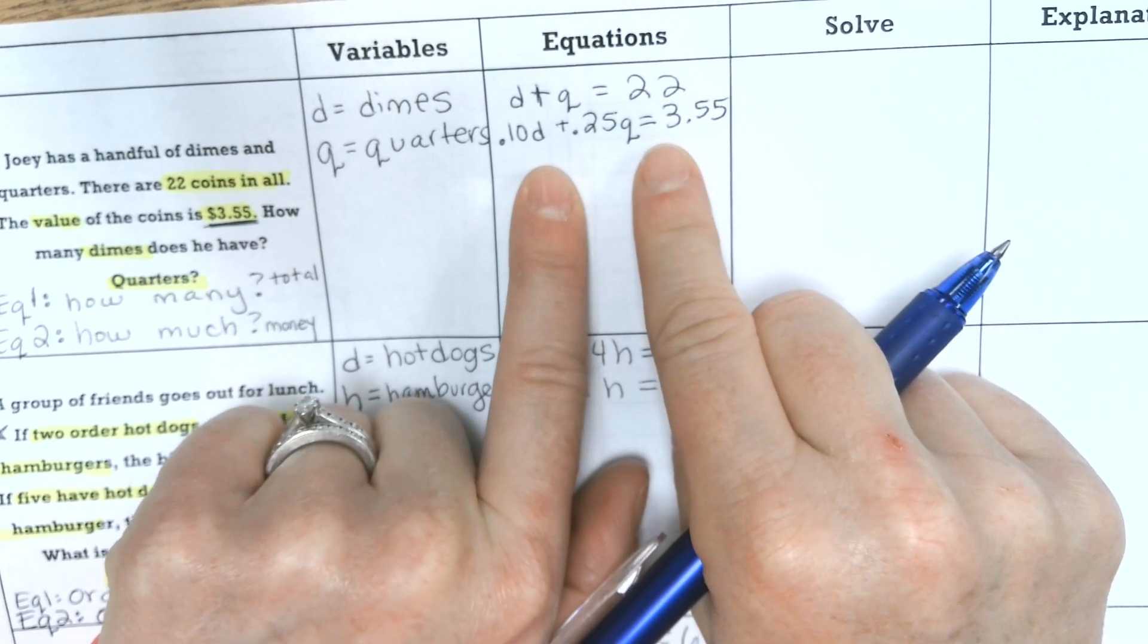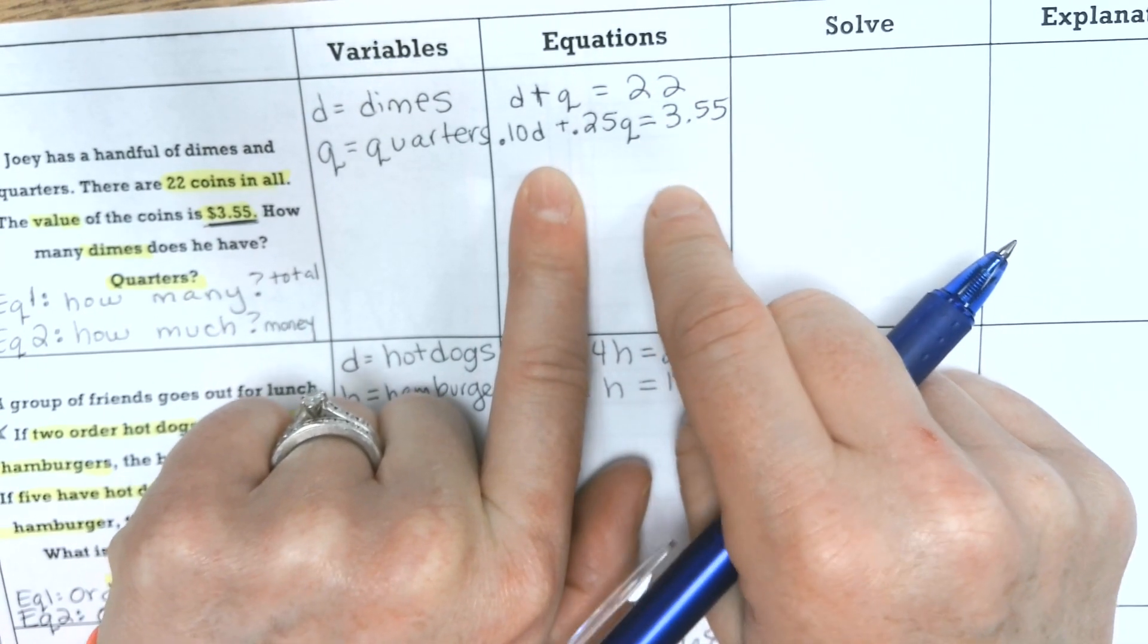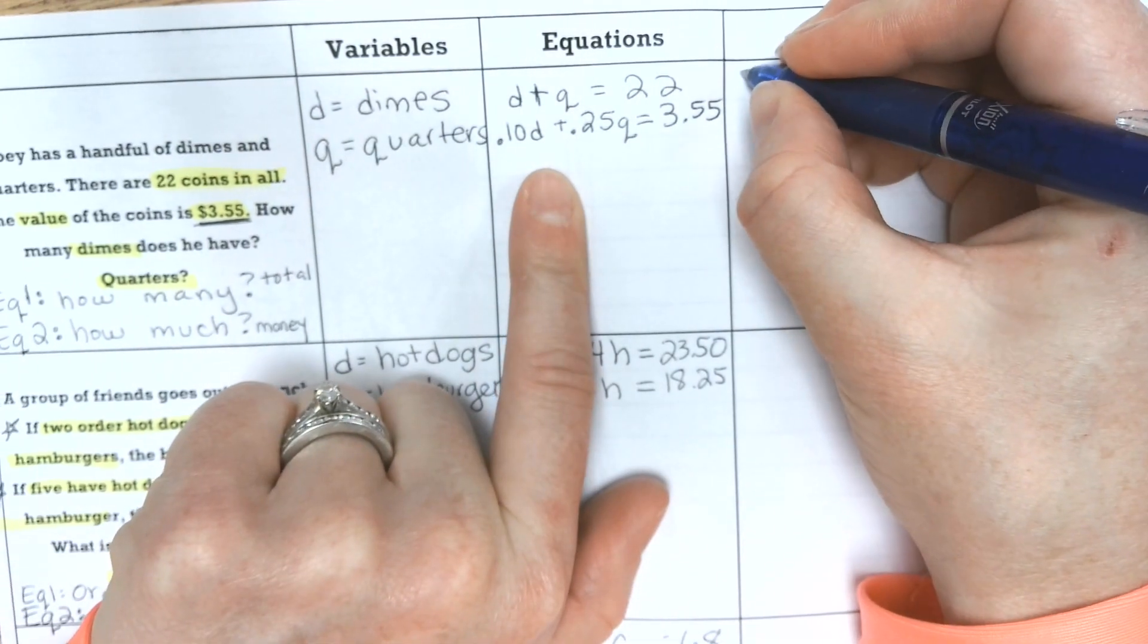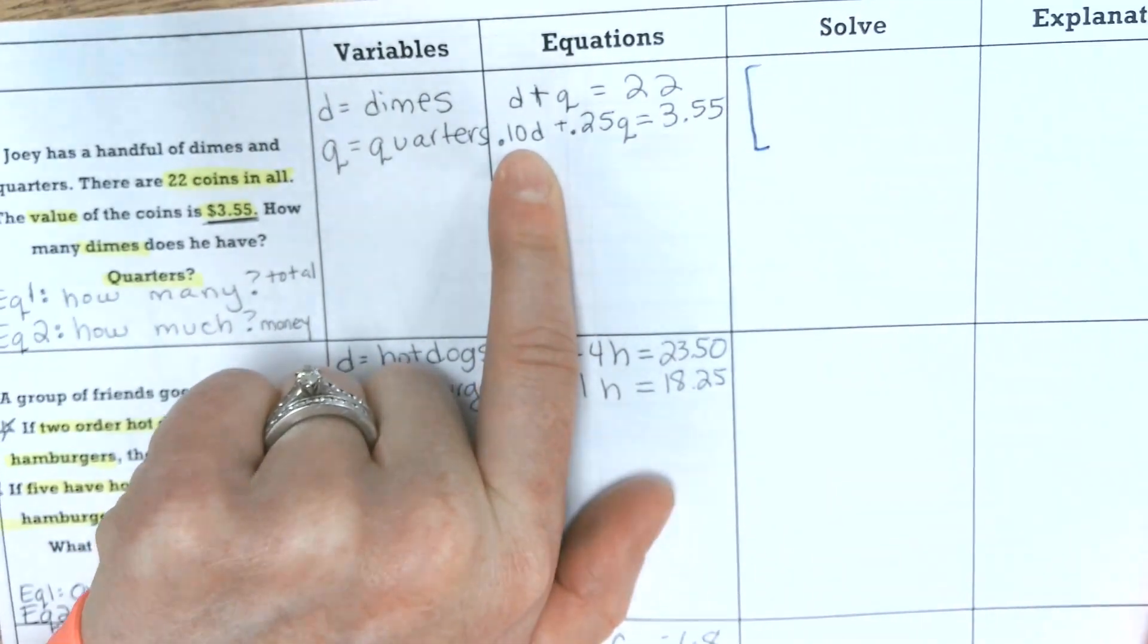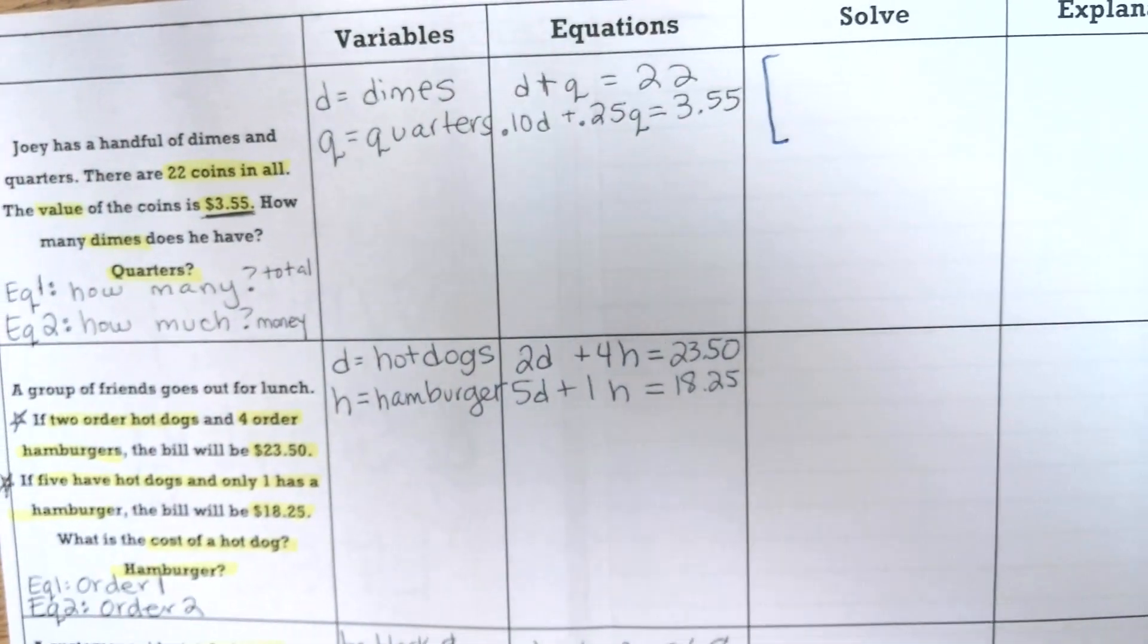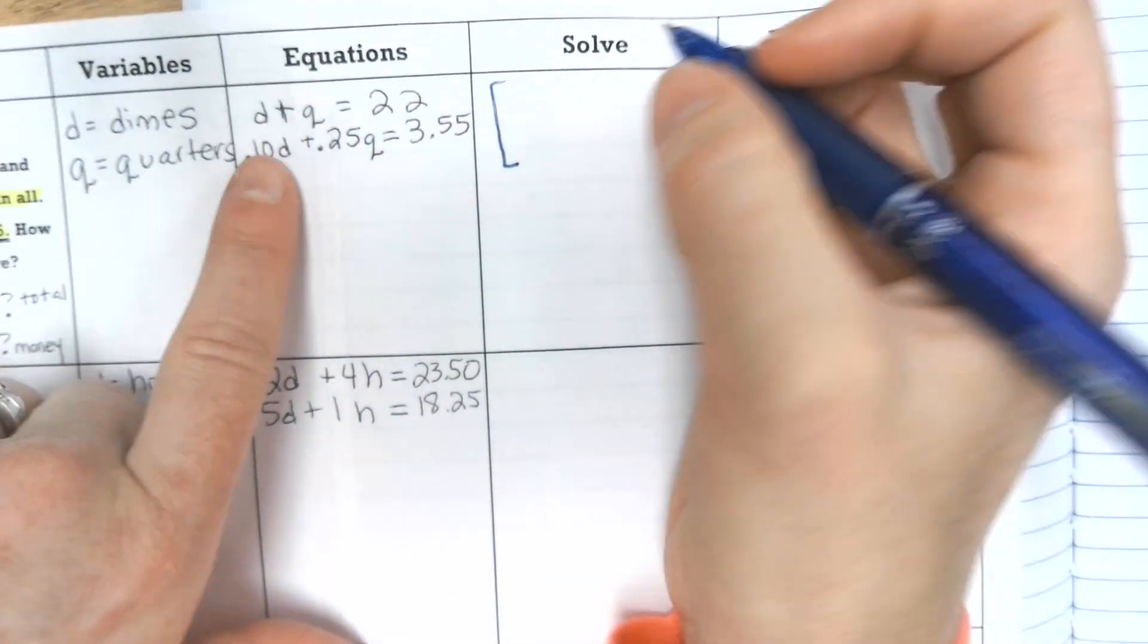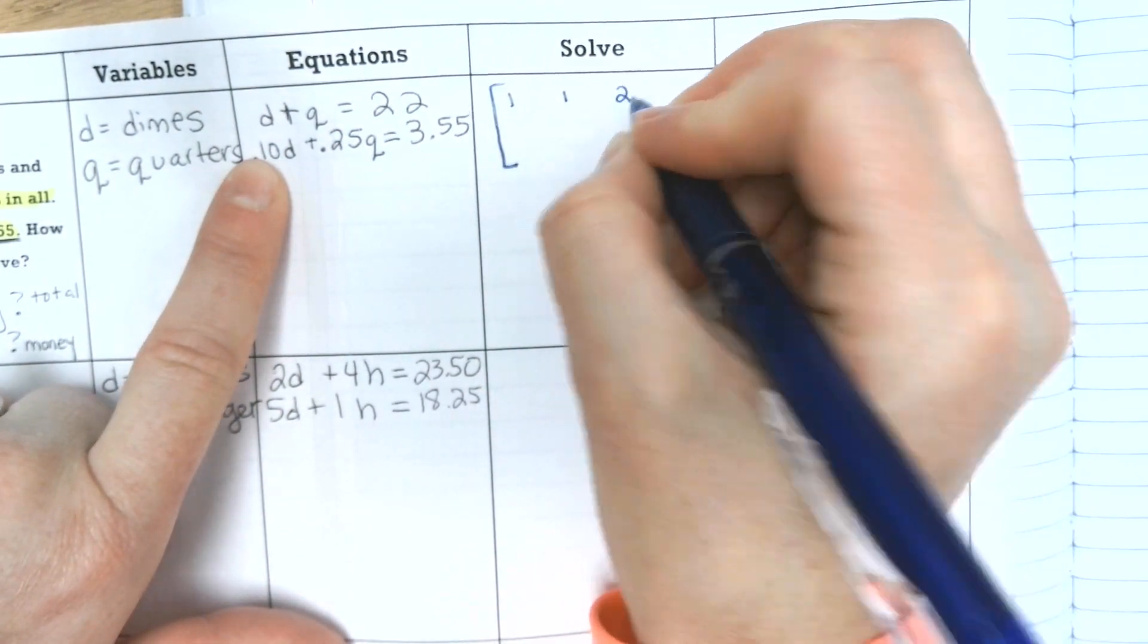So remember how we set the equation up? From the equation, we're just going to write the matrix and then use our calculator to solve. So let's go ahead and write the original matrix. So it would be 1, 1, 22.